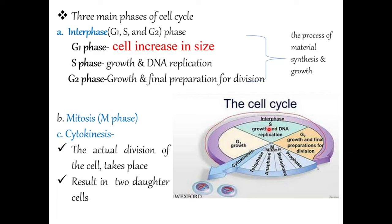After DNA replicates, the cell increases in size, then there is division of the chromosomes, followed by division of the actual cytoplasm during cytokinesis, resulting in two daughter cells.